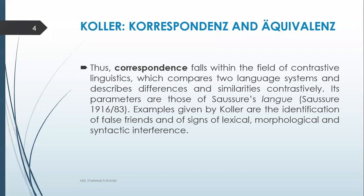Examples given by Köhler are the identification of false friends and signs of lexical, morphological, and syntactic interference. In correspondence and equivalence, we might get confused about what is the correct equivalent. If we fail to identify the morphological, lexical, and syntactic interfaces properly — if we cannot find the contrasts and similarities correctly — there may be false friends, meaning we might get confused and our translation work would not be proper.